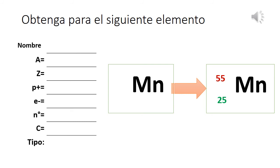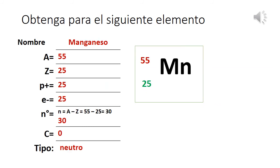Para el átomo de manganeso: número másico A = 55, número atómico Z = 25. Como el número atómico es igual al número de protones, tiene 25 protones. Como está en estado neutro, tiene 25 electrones. El número de neutrones se calcula con A − Z = 55 − 25 = 30 neutrones. Carga = 0, tipo: neutro.